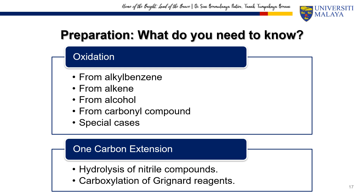We have now covered all the physical properties of the carboxylic acid: its appearance, boiling point, solubility, and acidity. Next, we will continue with the preparation of the carboxylic acid in the lecture hall. See you!